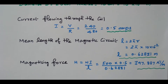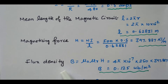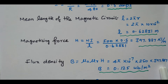Next we find the magnetizing force, i.e., magnetic field intensity: H = NI / L = (500 × 0.5) / 0.62831 = 397.887 ampere turns per meter. From this we find the magnetic flux density: B = μ₀μᵣH = 4π × 10⁻⁷ × 250 × 397.887 = 0.125 Weber per meter square.